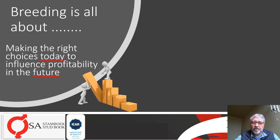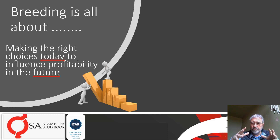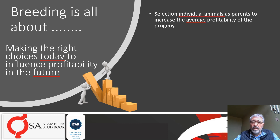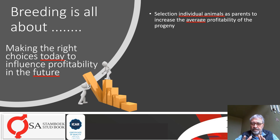Breeding is all about making the right choices today to influence the profitability in the future. The animals that you select today will determine the profitability from the offspring of those animals in a few years to come. Even just by culling certain animals from your herd can already make a difference in profitability. Your choices today will say a lot about the sustainability of profit in the future. It's all about selection of individual animals as parents to increase average profitability. You can't select for culling percentage, but you can select for individual animals that are more fertile, which will change the culling percentage in future.